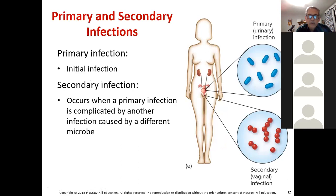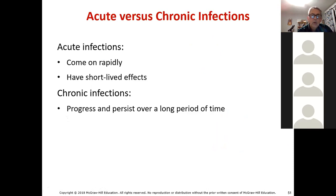The primary infection is the initial site of infection. A secondary infection occurs when a primary infection is complicated by another infection caused by a different microbe. Acute infections come on rapidly and have short-lived effects. Chronic infections can progress and persist over a long period of time — examples include leprosy, syphilis, and tuberculosis.